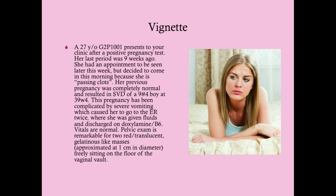A 27-year-old G2P1 presents to your clinic after a positive pregnancy test. Her last period was nine weeks ago. She had an appointment to be seen later this week but came in this morning because she is quote-unquote passing clots. Her previous pregnancy was completely normal, resulting in a spontaneous vaginal delivery of a 9-pound 4-ounce boy at 39 and 4. This pregnancy has been complicated by severe vomiting, causing two ER visits where she was given fluids and discharged on doxylamine B6. Vitals are normal. Pelvic exam reveals two red translucent gelatinous-like masses, each approximately one centimeter in diameter, freely sitting on the floor of the vaginal vault.